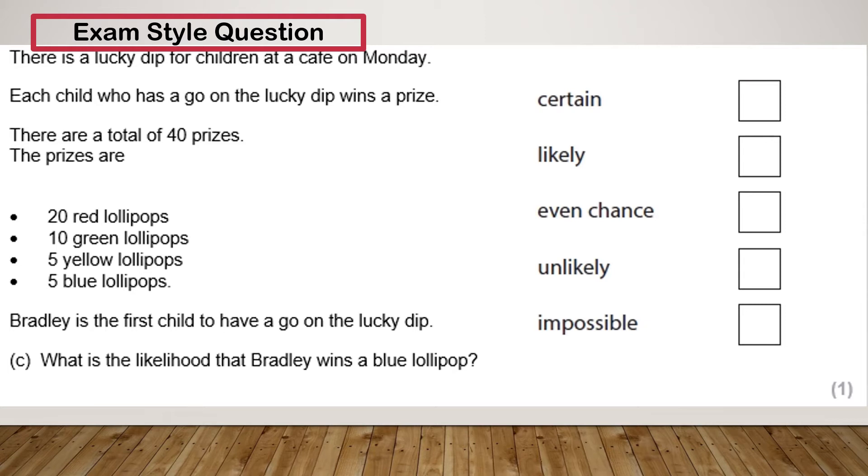So there's a lucky dip for children at a cafe on Monday. Each child who has a go on the dip wins a prize. There are a total of 40 prizes, and the prizes are 20 red lollipops, 10 green lollipops, 5 yellow lollipops, and 5 blue lollipops. Bradley is the first child to have a go. So what is the likelihood that Bradley wins a blue lollipop?